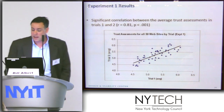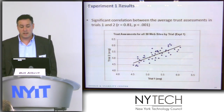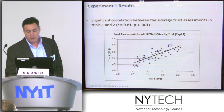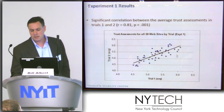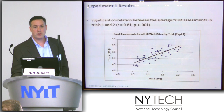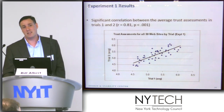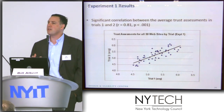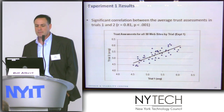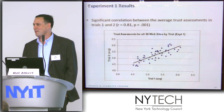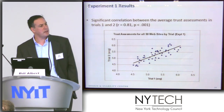Here's what we found: we found a significant correlation between the average trust assessments in trials one and two. Each dot represents one of the 100 websites we tested. You can see some sites that scored low in trial one also scored low in trial two, and generally there's a really nice correlation. In other words, people were being really consistent about how they were judging trust from one trial to another — they couldn't even recognize the site, but there was something going on where they were responding instinctively the same from one trial to the next. We had an R value of 0.81, which is very, very high for social sciences — we were really thrilled about this.